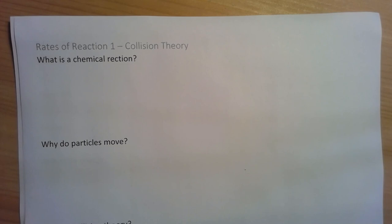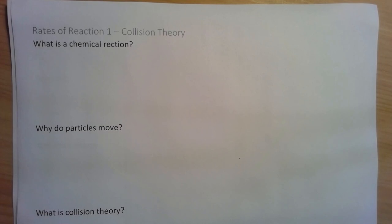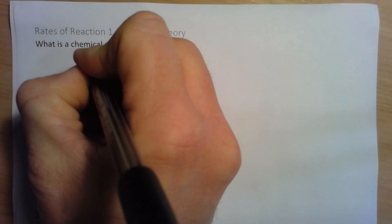Welcome to lesson one of rates of reaction. We're going to be looking at collision theory today and thinking about some of the key terms and basic ideas. Collision theory is something that we use to explain the factors that affect the rate of a chemical reaction. So we're going to think about what a chemical reaction is first of all.